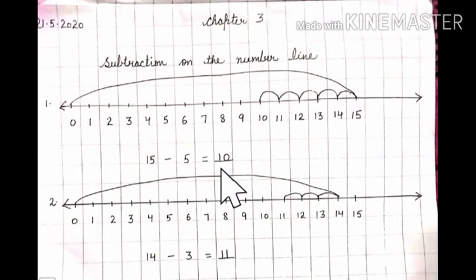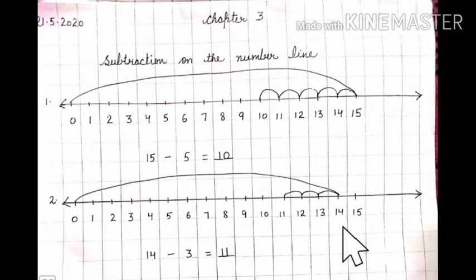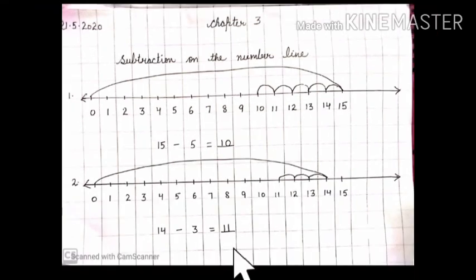Then leave one line. For the next number, write number 2. Again, you will draw a number line from 0 to 15 and write the numbers. In the next line, write 14 minus 3. Now we will solve it. We will take a jump from 0 to 14, as 14 is the first number. Then we will take 3 steps back: 13, 12, 11. So the answer is 11.